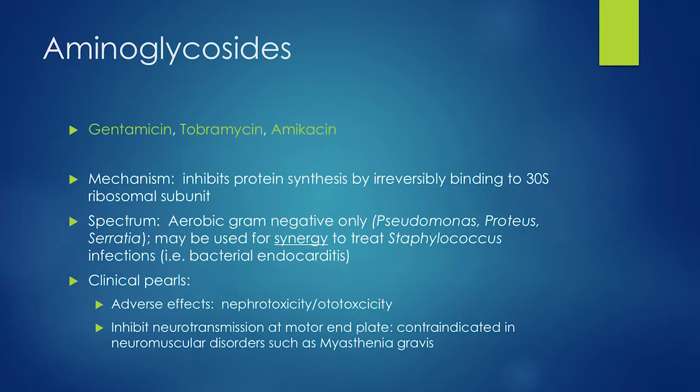Aminoglycosides also inhibit neuromuscular transmission at the motor end plate, so all aminoglycosides are contraindicated in any patient with a neuromuscular disorder such as myasthenia gravis.